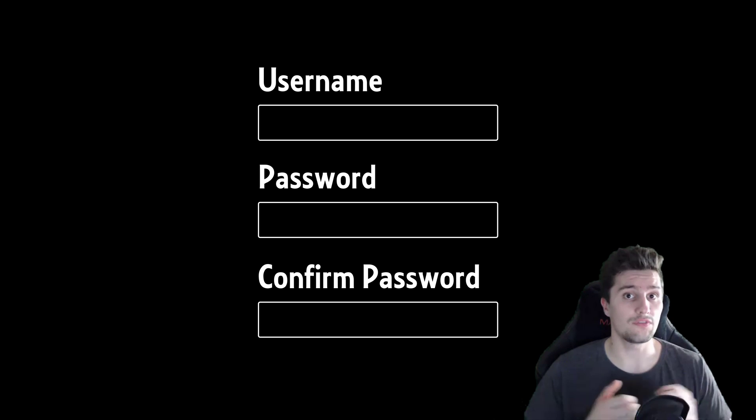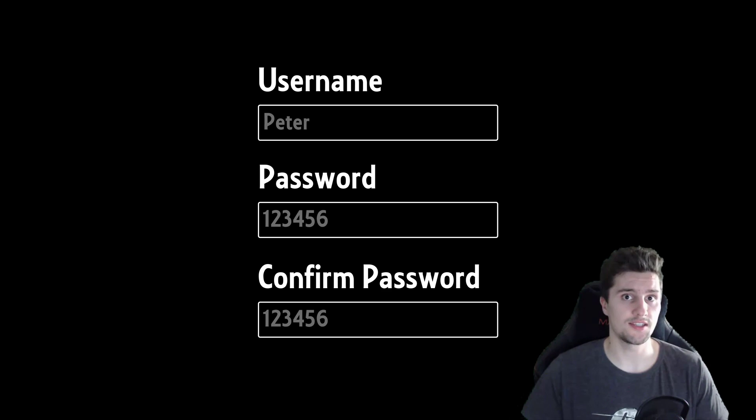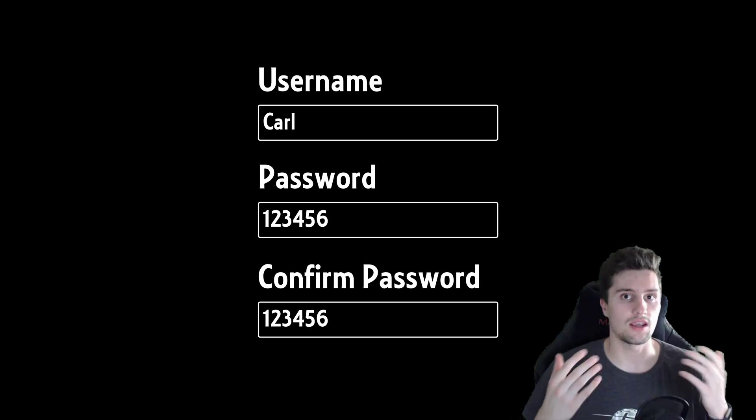We say that we take one test out of each equivalent class. An equivalent class could be, for example here, that we take those inputs in this registration form that lead to a successful registration. All of these inputs together that lead to a successful registration belong to a single equivalent class. That means if we enter a valid username here that is not already taken and we repeat the password correctly, then this would lead to a successful registration. Then it wouldn't make much sense if we would test this once with username Peter and once with username Carl, because if Peter succeeds then it's very likely that Carl will succeed too. Because those two inputs belong to the same equivalent class, we only take a single test case out of that equivalent class, and we can choose on our own which of those test cases inside of this equivalent class we take to test.